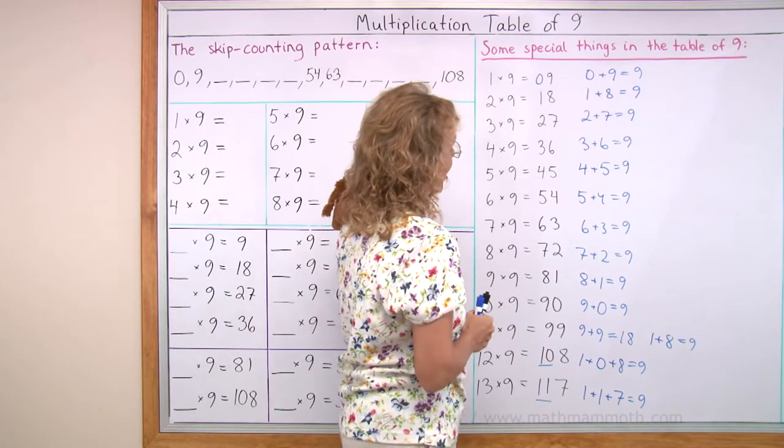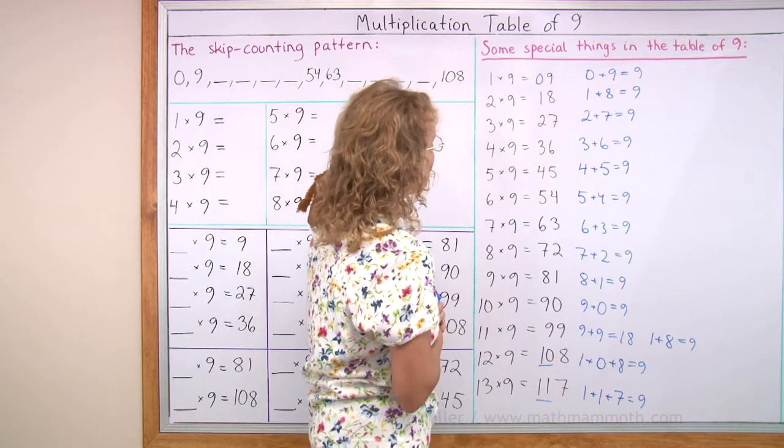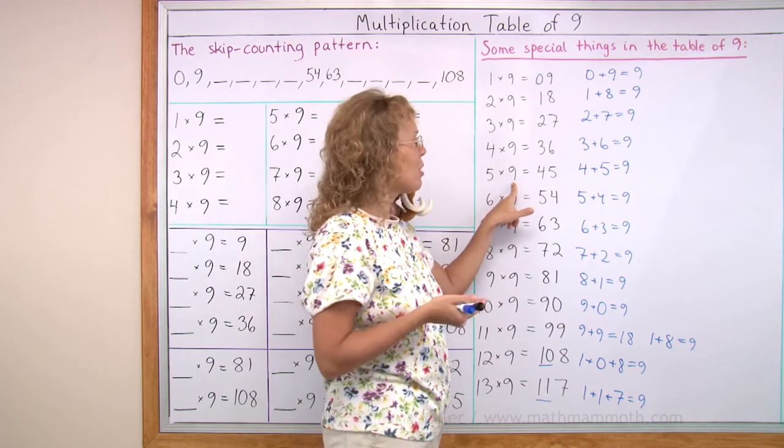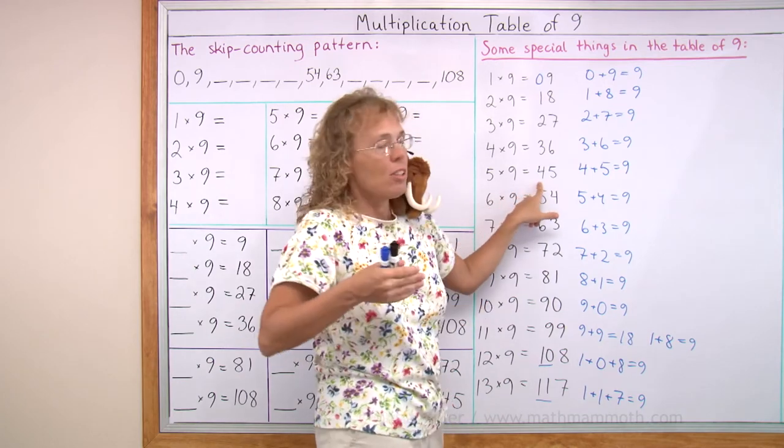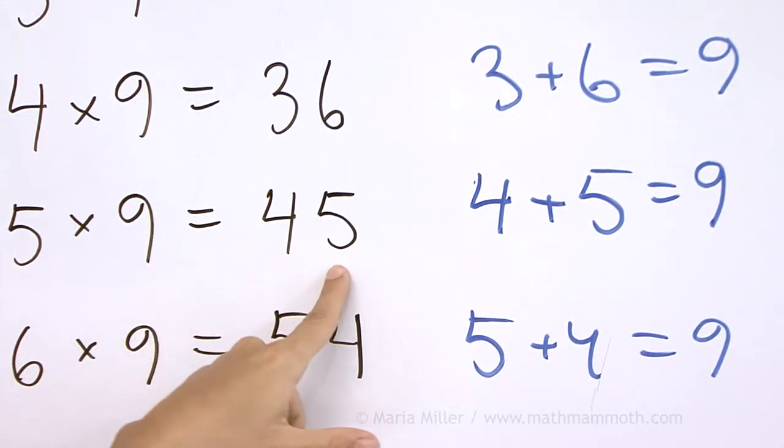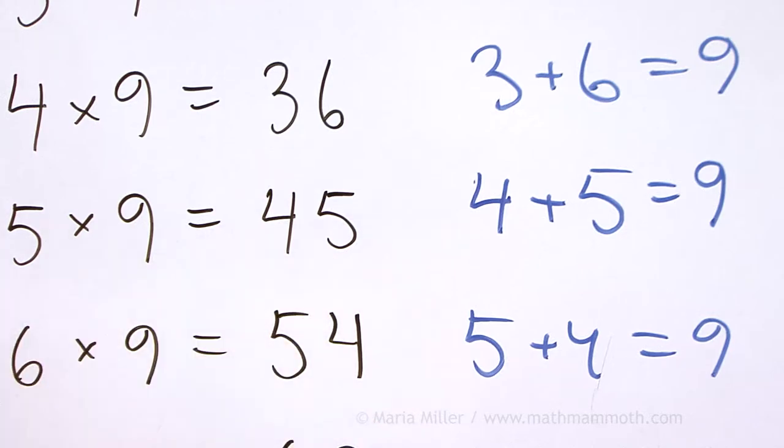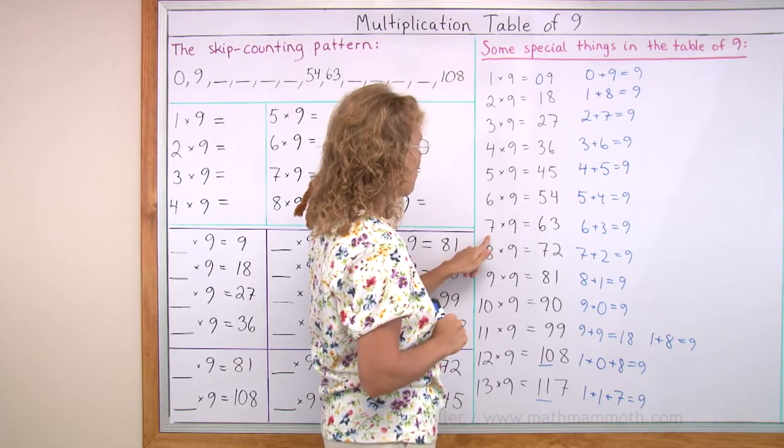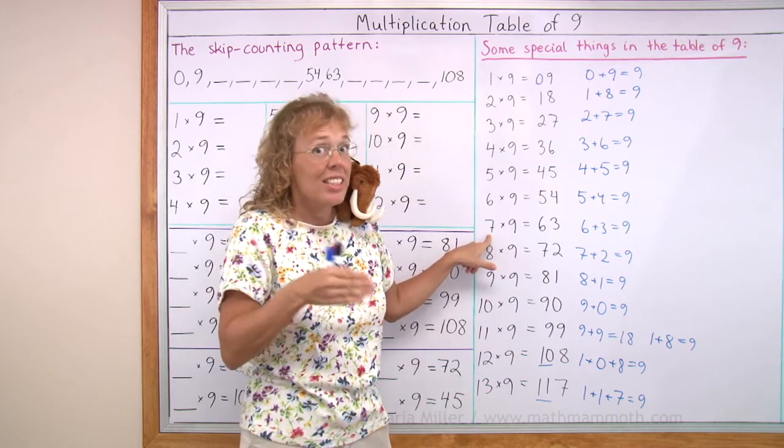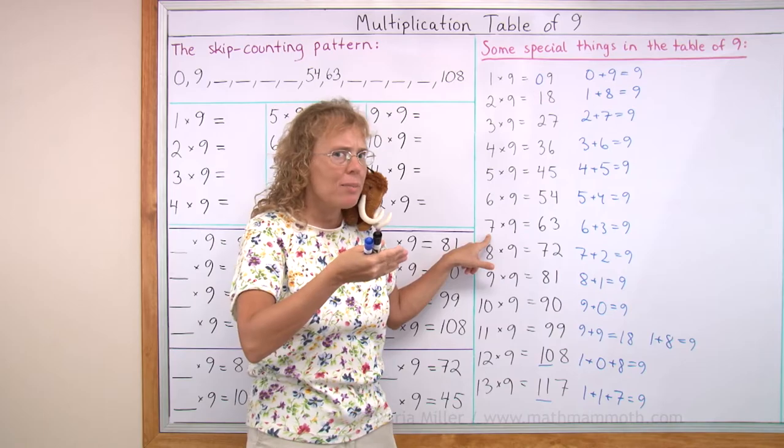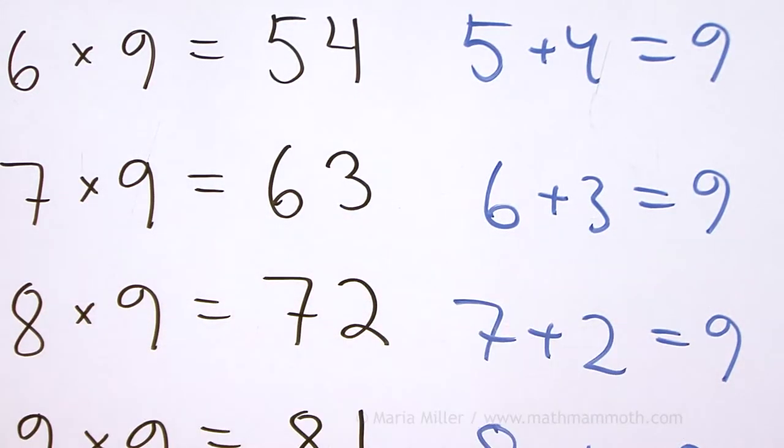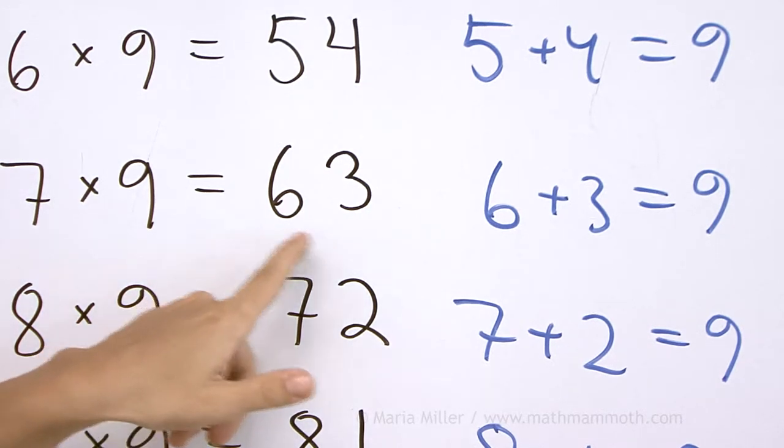You can use this feature when you're studying the table of 9 too. For example, 5 times 9. I already told you that it is less than 50, so it's going to be in the 40s. 40 what? Then just think that 4 plus something has to equal 9. It has to be 4 plus 5, right? 45. Or let's take 7 times 9. Think of it this way. 7 times 9 has to be less than 70. It's in the 60s, 60 something. 60 what? It has to be so that 6 plus whatever makes 9. 6 plus 3. So it is 63.